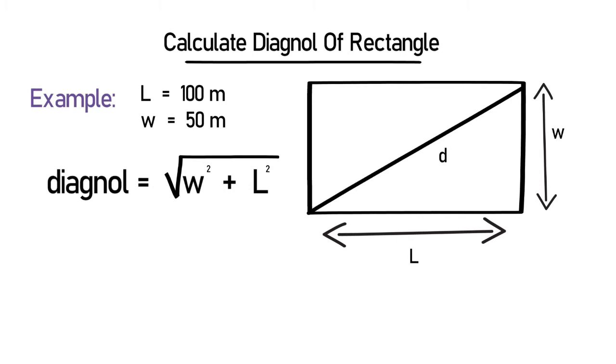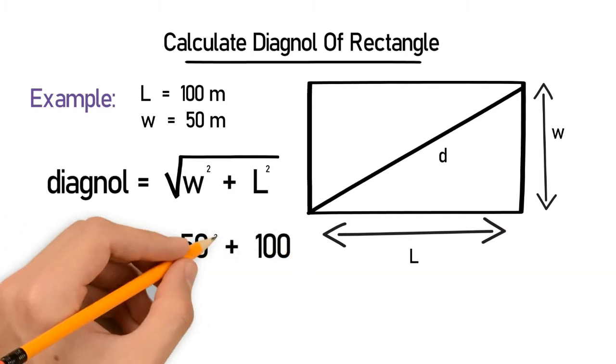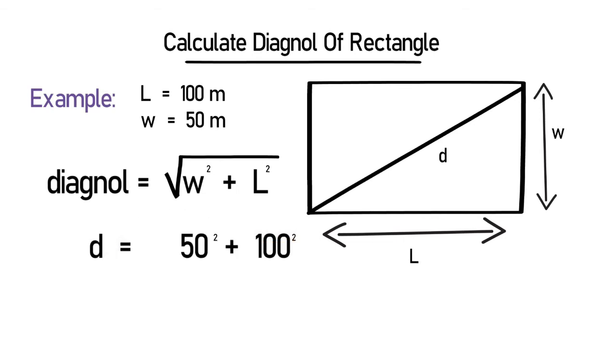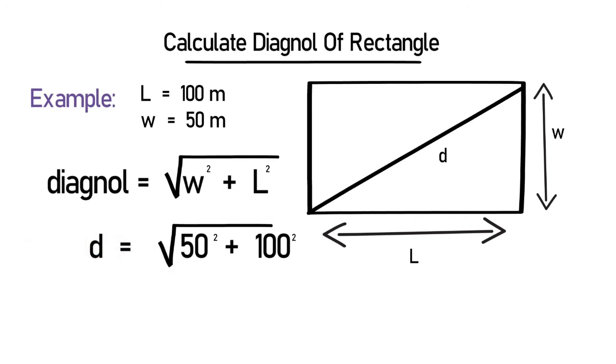After putting the values of length and width, this becomes d equals square root of 50² plus 100². Calculate this with the help of a calculator and you will get the diagonal is equal to 111.8 meters.